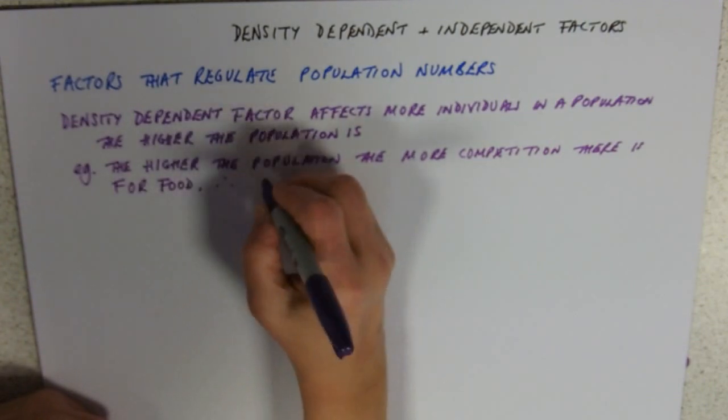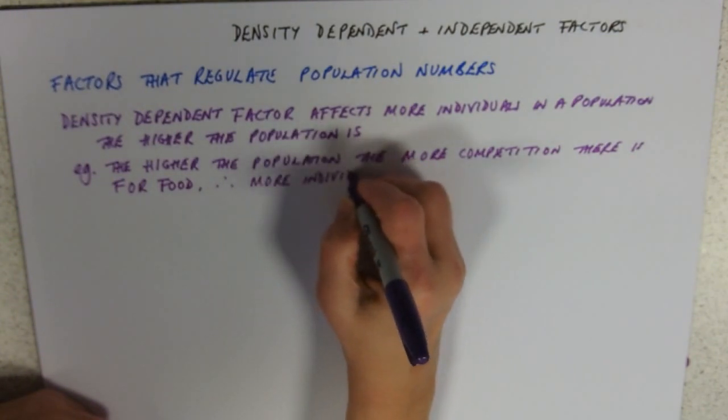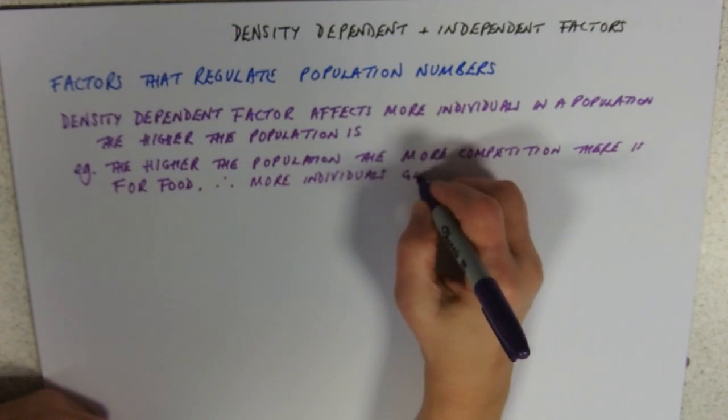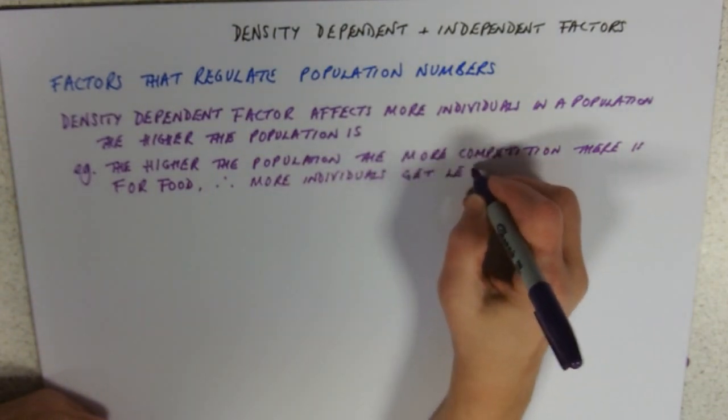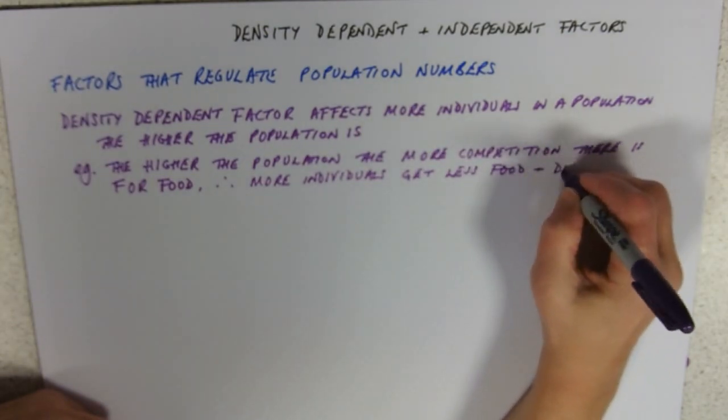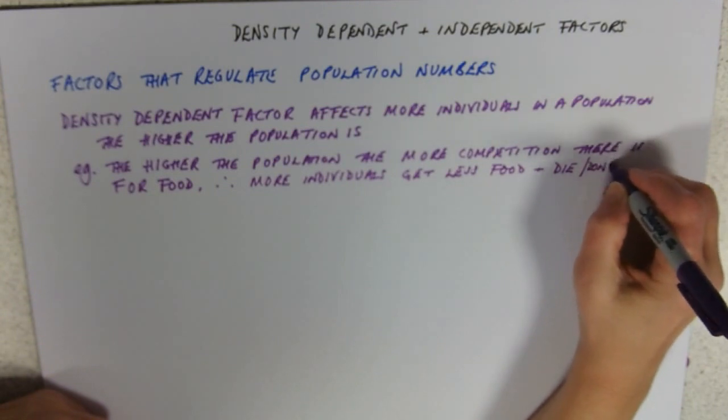Therefore, more individuals get less food and die, or don't reproduce.